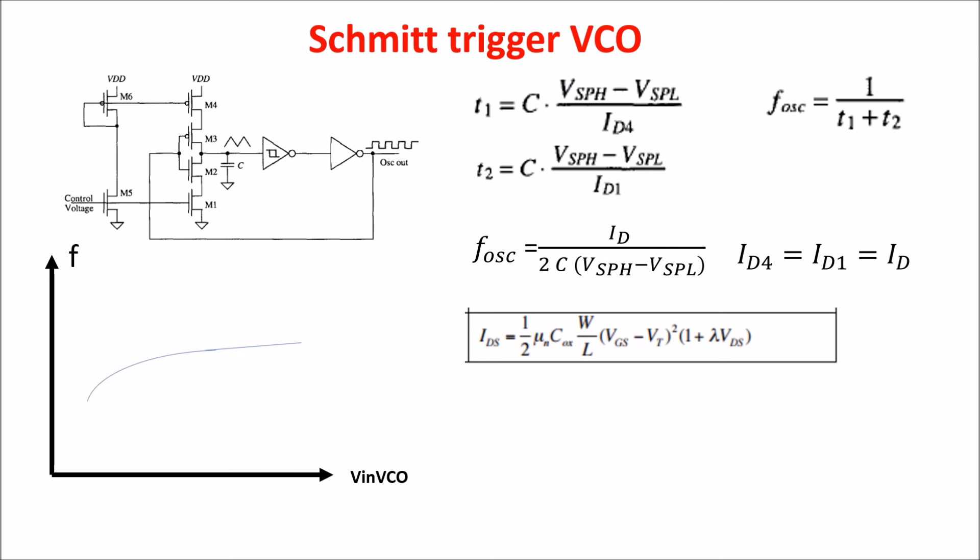The Schmitt Trigger is not easily optimized for high speed. The effective switching resistance of the MOSFETs is difficult to reduce without changing the switching point voltages, so you cannot reach high frequencies with this circuit.